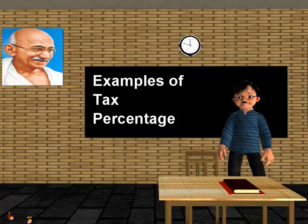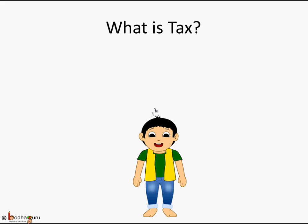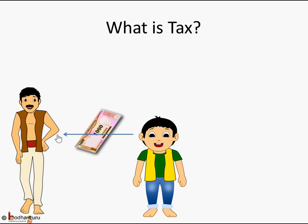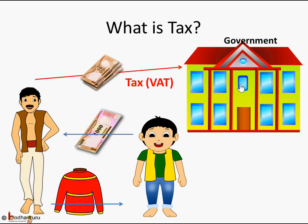Hello children. In this lesson we are going to learn more about tax. In our last lesson we learned what tax is and how it is calculated. You went to buy a sweater, paid a thousand rupees to the seller, and the shopkeeper pays some amount of money to the government in the form of sales tax. This is how the government earns money and uses it to build roads, trains, airports, schools, hospitals, etc.